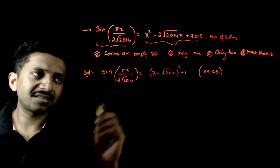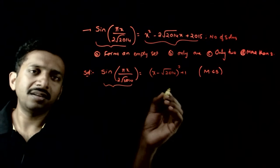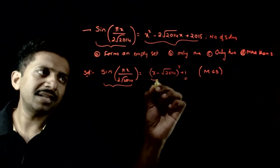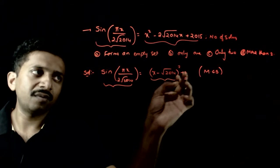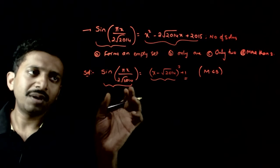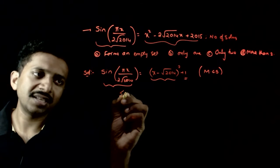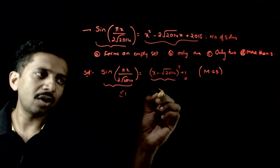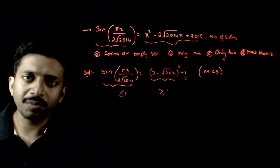Now if you analyze this, sin of something is equal to 1 plus square of some number, 1 plus some positive number. But humko pata hai, sin is always less than or equal to 1. This side is always greater than or equal to 1 kyunki 1 plus some positive number.